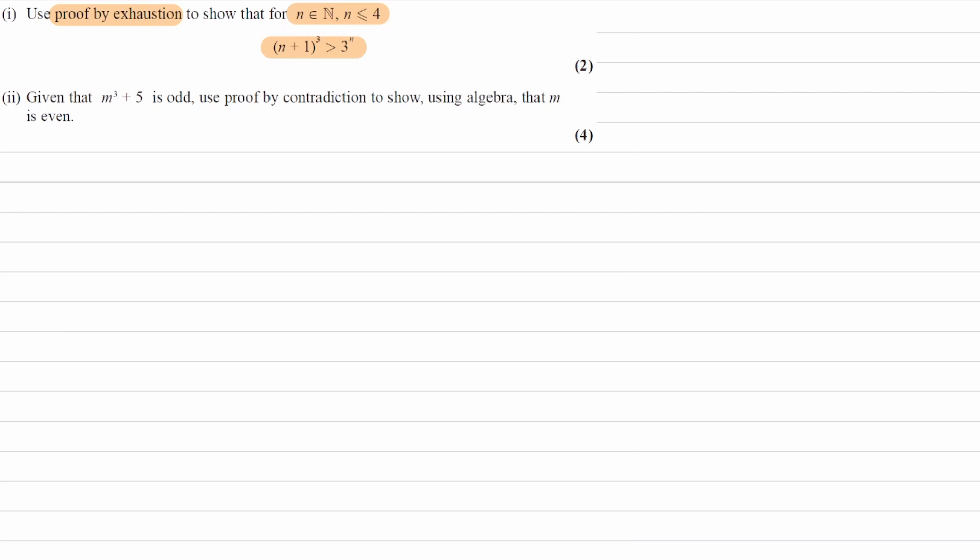So natural numbers are positive integers. Natural numbers are the numbers 1, 2, 3, 4, 5, 6, 7, etc. We're also told that n is less than or equal to 4. So if n is a natural number, a positive integer, and is less than or equal to 4, that means the numbers we're considering here are 1, 2, 3, 4.